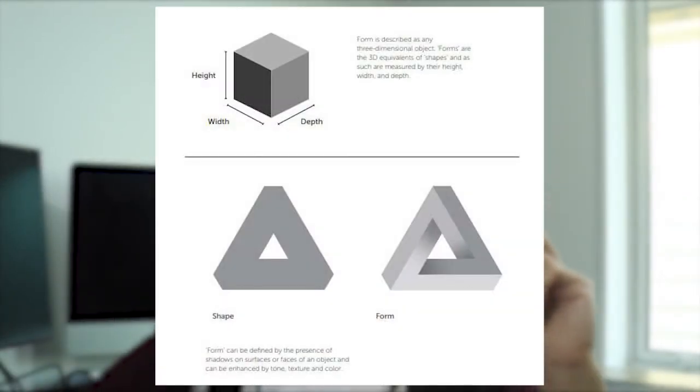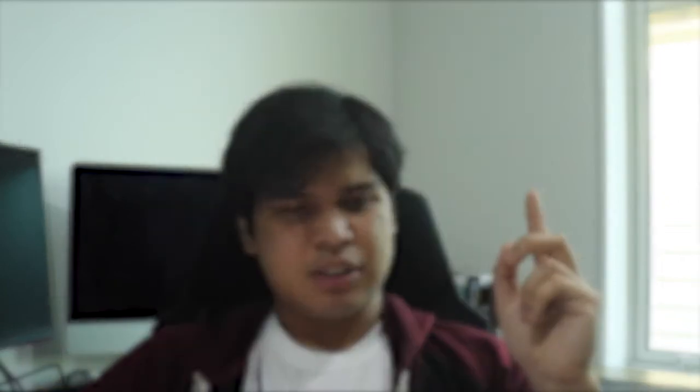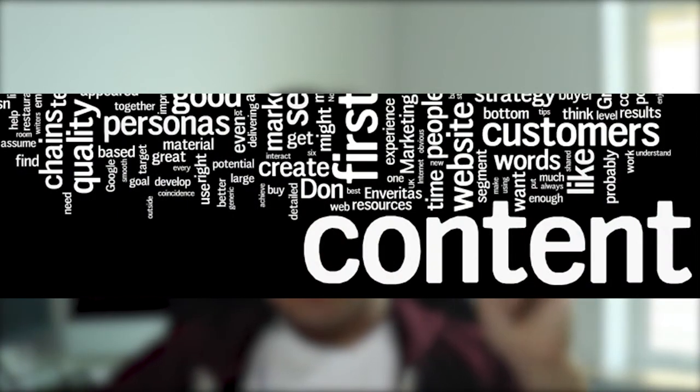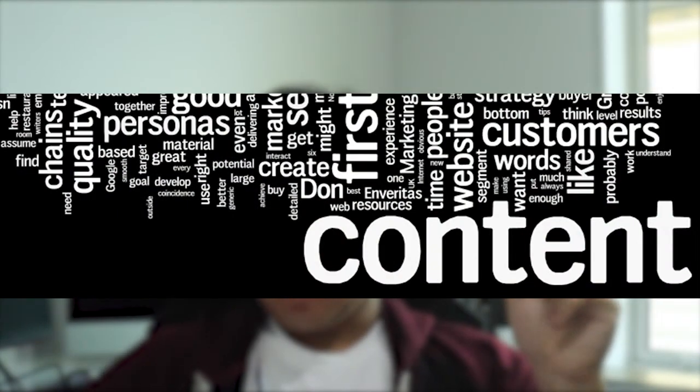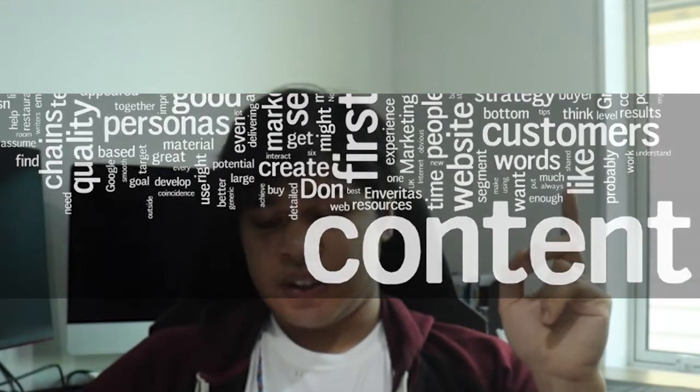First we have form and content. As one of the principles, form is a pure visual aspect while content implies the subject matter, story or information the designer seeks to communicate to the viewer. Form is something we see in a visual — like lines, curves, shape and dimension — while content is more the story aspects: written information.